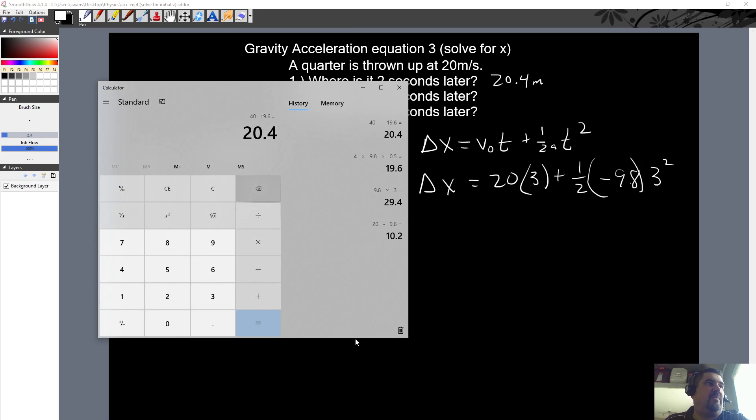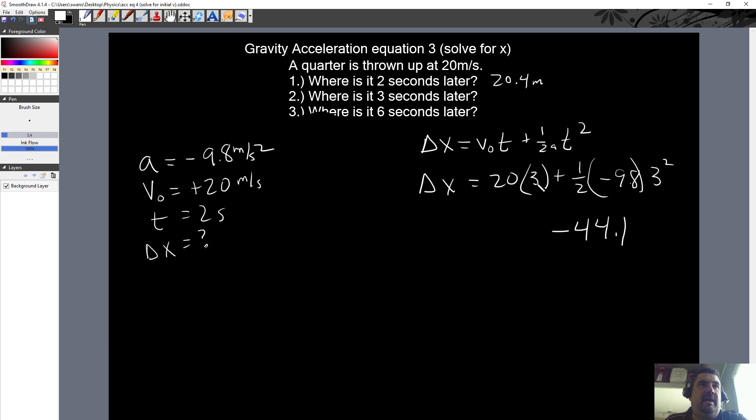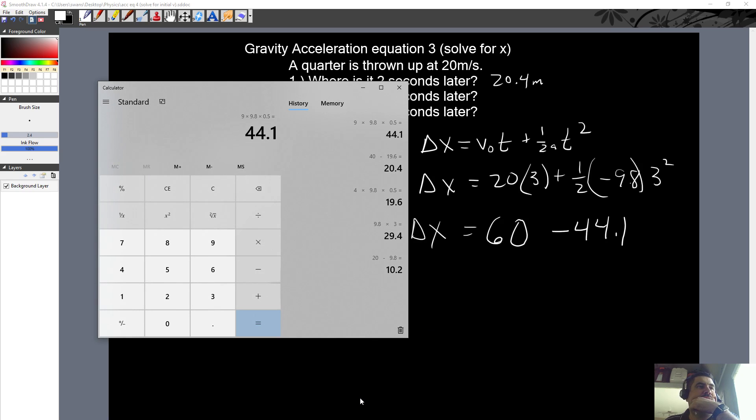So let's do that end part. 3 squared is 9. So 9 times 9.8 times 0.5, that's a half, 44.1. So it's negative 44.1. And over here, it's 60. So 60 is equal to delta X. So then we got 60 minus 44.1. 60 minus 44.1 is equal to 15.9.